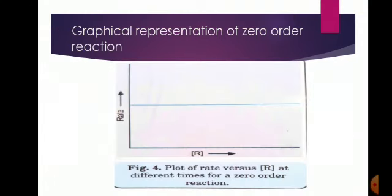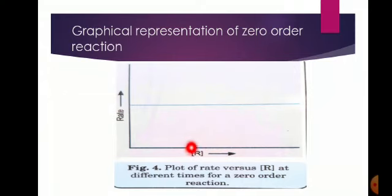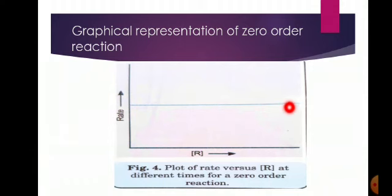Second is the graphical representation of zero order of reaction. Here two values are taken: rate and concentration of reactant R. Since zero order of reaction never depends on the concentration of the reactant according to time, the rate is a constant value, so we get a straight horizontal line on the graph.